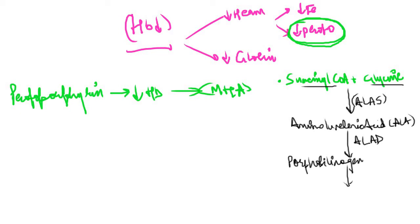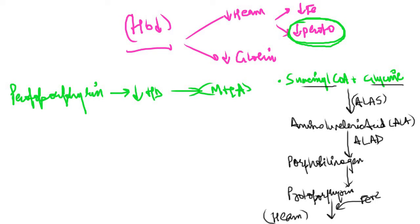From porphobilinogen, various steps of reaction occur and ultimately protoporphyrin is formed. Finally, an enzyme called ferrochelatase unites the protoporphyrin with iron to form heme, which ultimately binds with globin to form hemoglobin. In sideroblastic anemias, a problem can occur at any step in this chain, resulting in decreased production of protoporphyrin, decreased heme, decreased hemoglobin, and microcytic anemia.